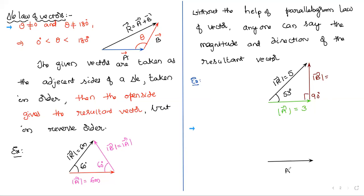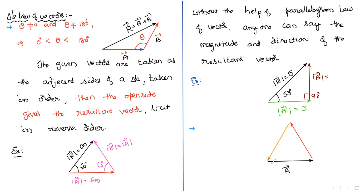Suppose this time I'm taking three vectors, not two. This is A-bar, this is B-bar, and this is C-bar. I took the three vectors in order, closing the triangle. Keep in mind: closing the triangle. We started from here and finally reached back there.